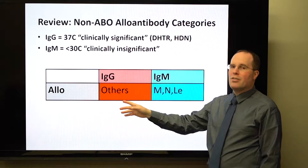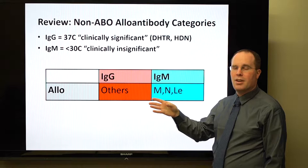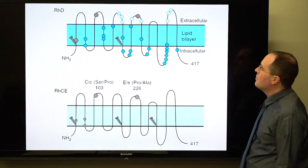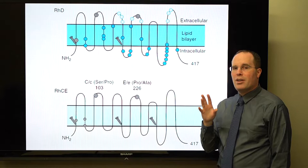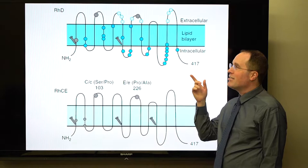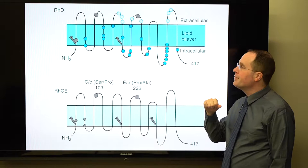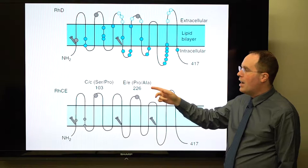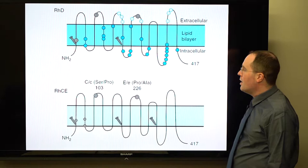Starting with the RH system, the five main antigens are D, big C and little c, big E and little e. Keep in mind there is no little d antigen and no little d gene — you either have the D gene or you don't. With the CE gene you can have any combination of big/little c and big/little e, and these are inherited as a haplotype.